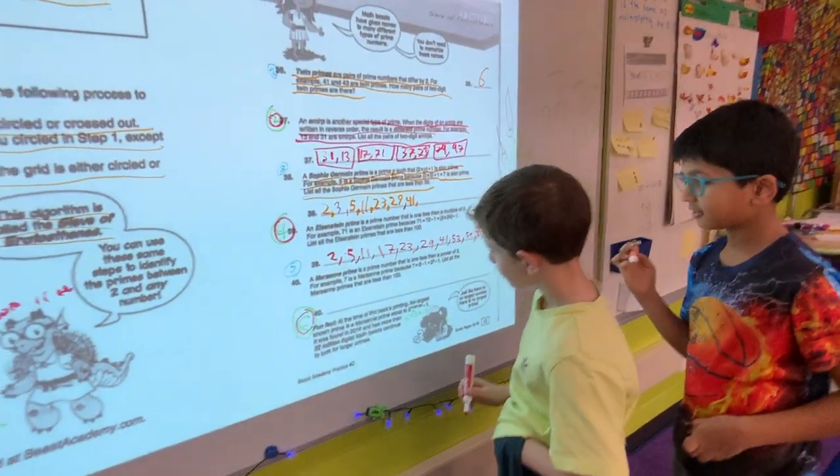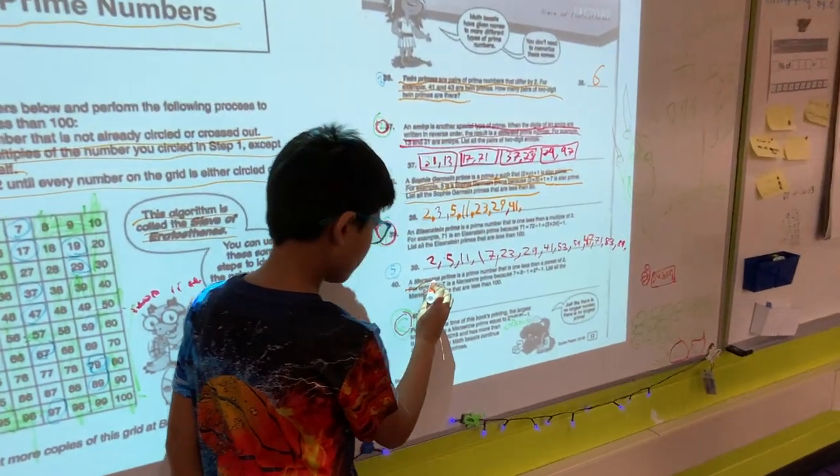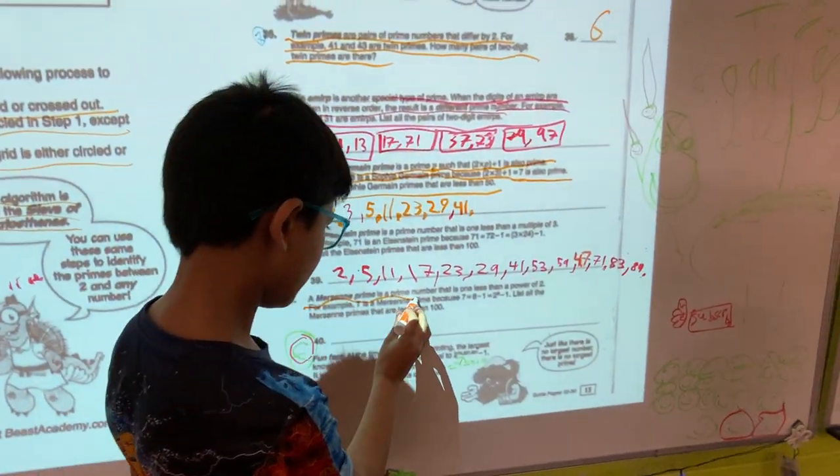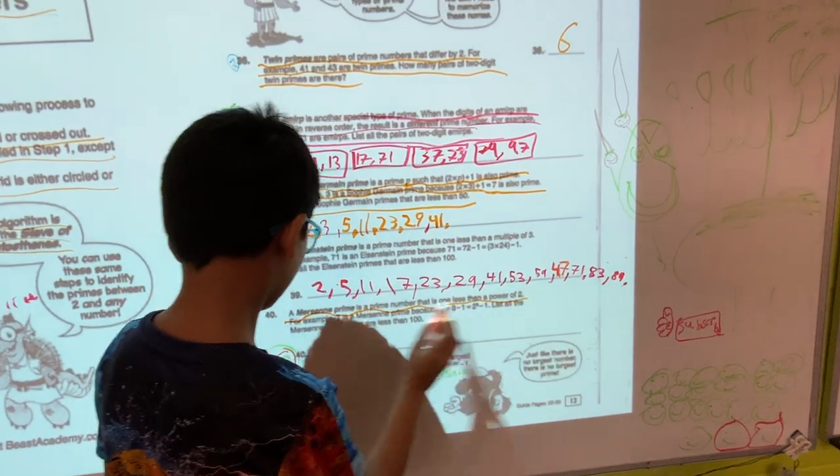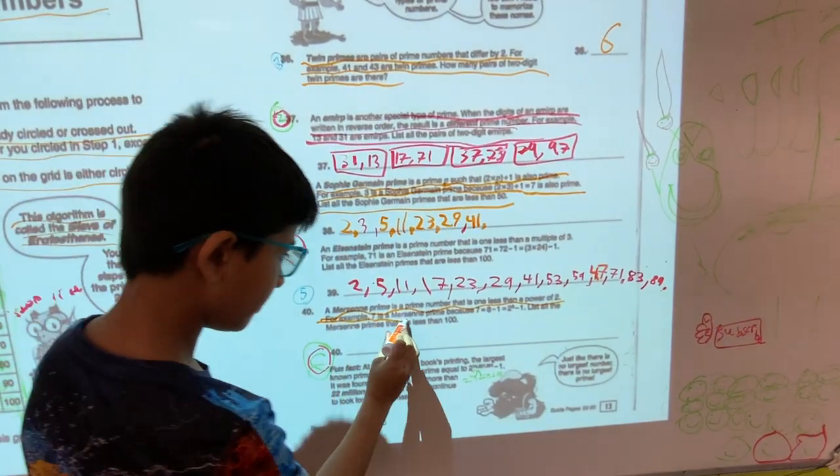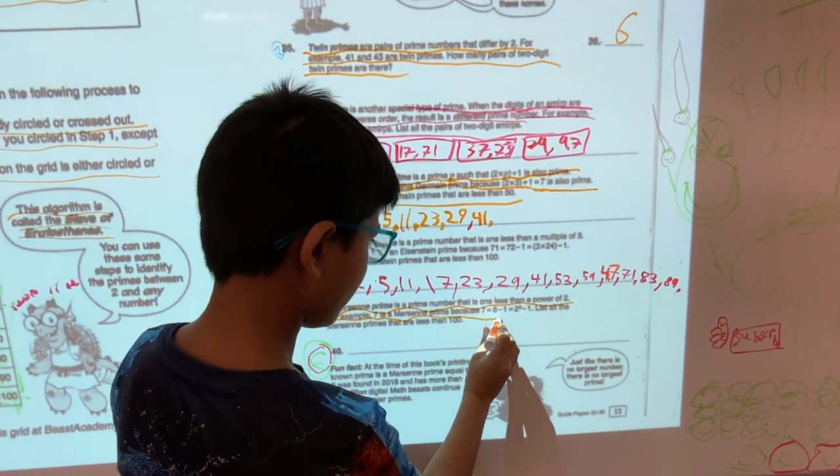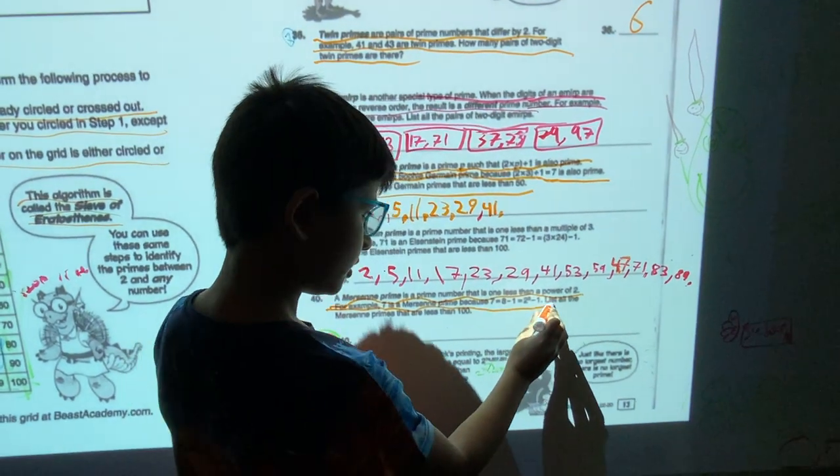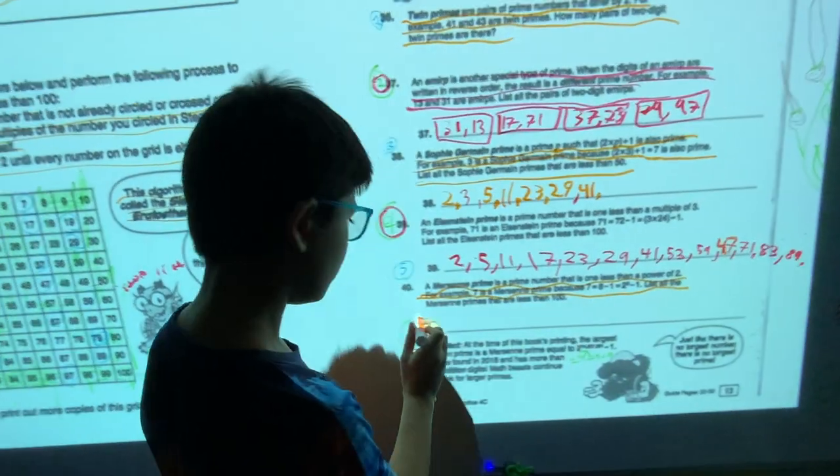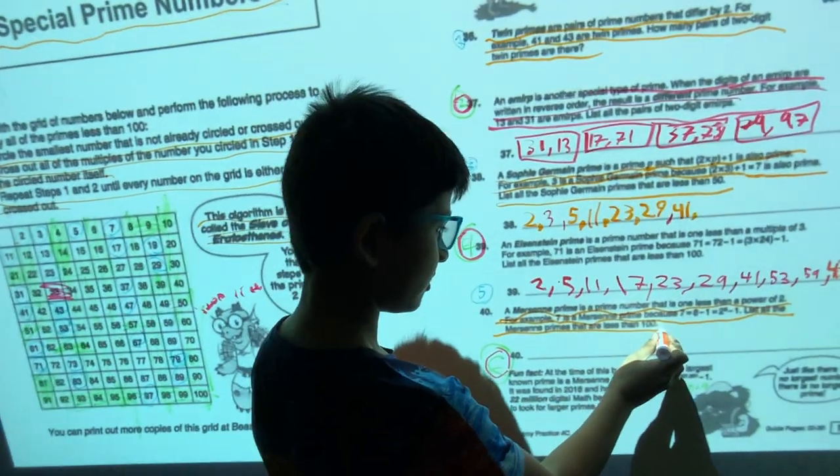Now we are going to be doing Mersenne primes. A Mersenne prime is a prime number that is 1 less than a power of 2. For example, 7 is a Mersenne prime because 7 equals 8 minus 1 equals 2 to the power of 3 minus 1. List all the Mersenne primes that are less than 100.